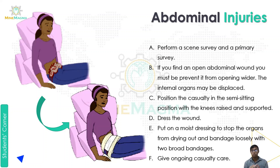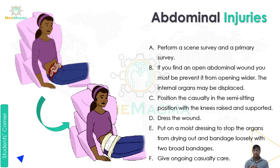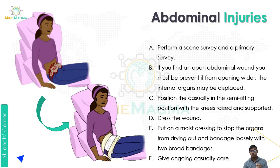The casualty should be placed in a semi-sitting position, with the knees given a little bit of support, as shown in the image on the left. Fourth, dress the wound — we need to apply a moist dressing so that the organs do not dry out, and bandage loosely with two broad bandages. The last point is to give ongoing casualty care.